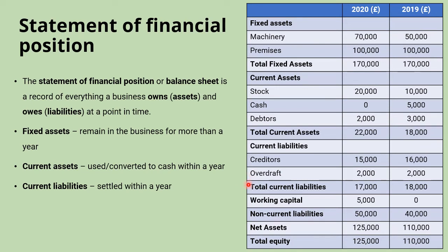Moving to the non-current liabilities: these are also things that we owe, but they are paid back over a longer period of time — more than a year. This would include long-term loans and mortgages.